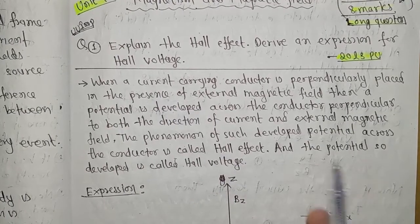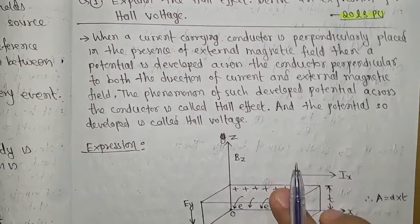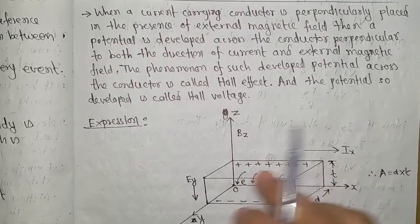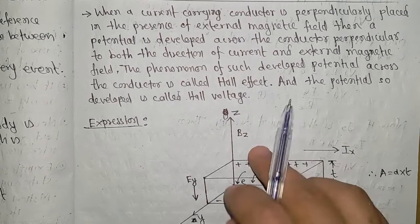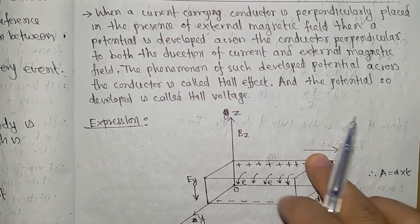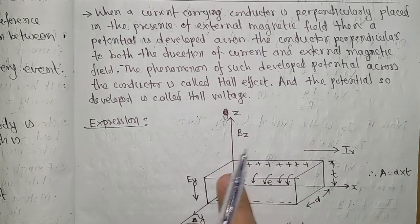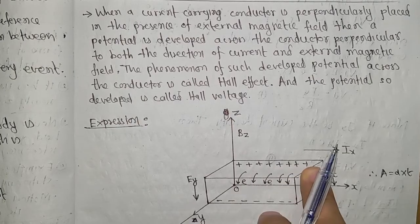The phenomenon of such developed potential across the conductor is called Hall Effect. The conductor is placed perpendicularly in the external magnetic field.